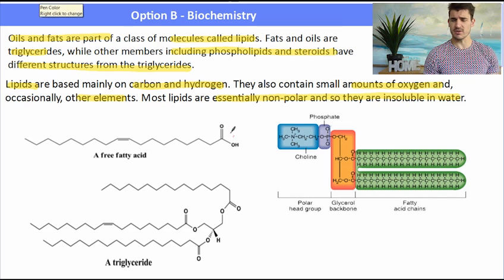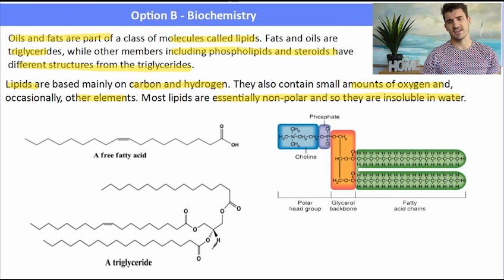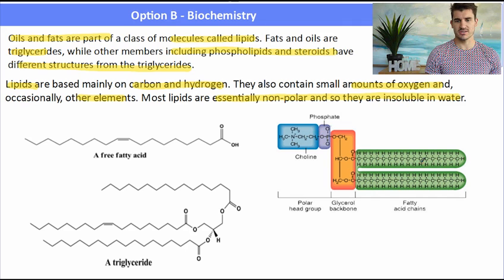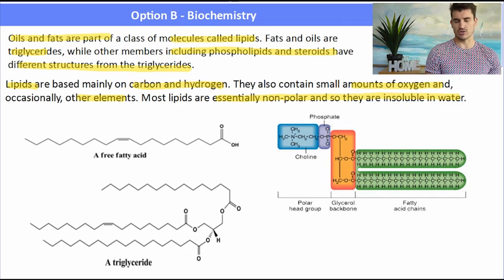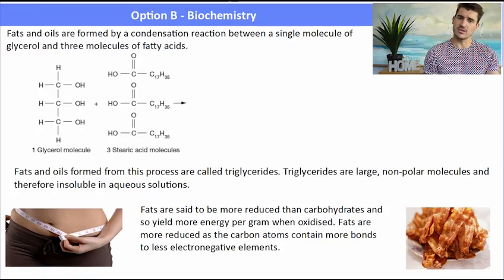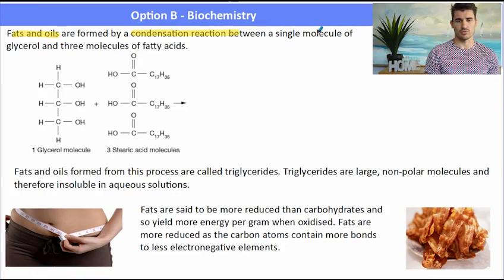The first one we have there is a free fatty acid — it has a long hydrocarbon tail and then the head of that molecule is a carboxylic acid group. We have a triglyceride underneath, which is three fatty acid molecules attached to a glycerol. A phospholipid has a similar structure to a triglyceride except one of the locations of the bond has been replaced by a phosphate group.